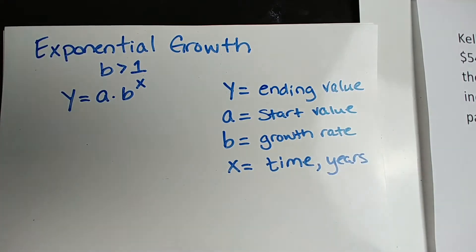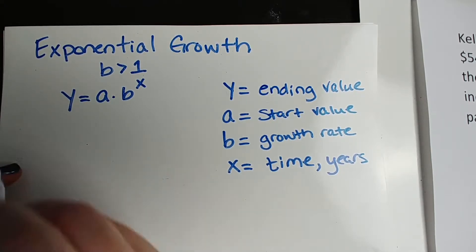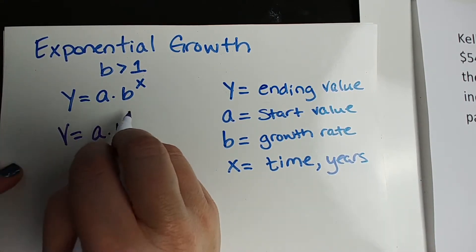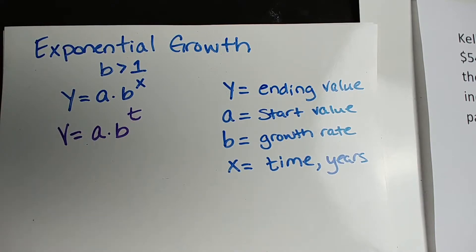For this problem, they've actually given specific variables. So we're going to change it to the variables that they suggested. They said the value V, so we're going to use that. And they said time in years T, so we're going to use that.